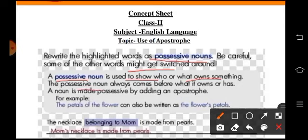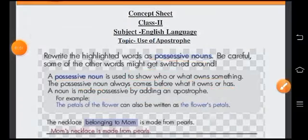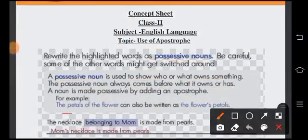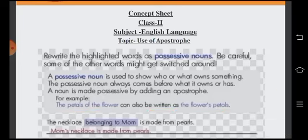A noun is made possessive by adding an apostrophe. For example, the petals of the flower can also be written as the flower's petals. Okay, so let's do the exercise.